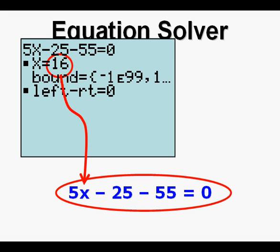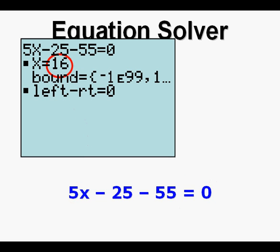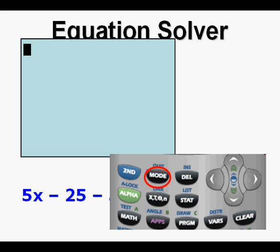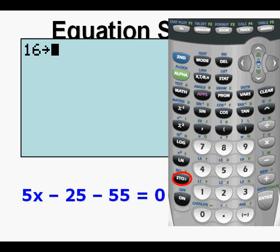It's always a good idea, especially when starting something new, to check our work. We'll check 16 to make sure it's the right value for X. Let's get to our home screen by pressing Second, then Mode for Quit. Let's test our answer by trying 16: enter 16, then press the storage key which is STO on the left side of the keypad, then press the X key, then press Enter.